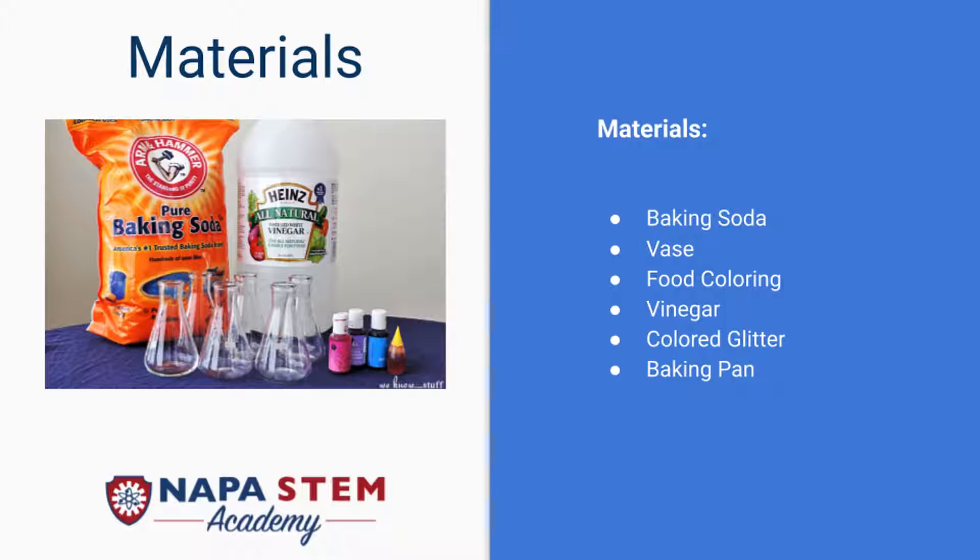The materials you're going to need for this experiment are baking soda, a vase, food coloring, vinegar, colored glitter, and a baking pan.